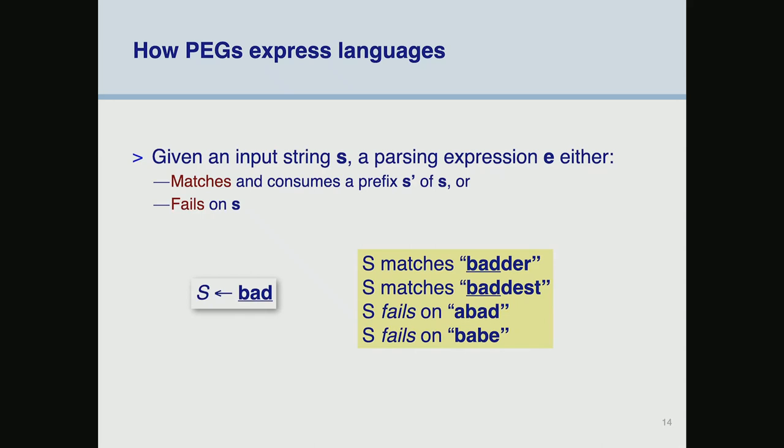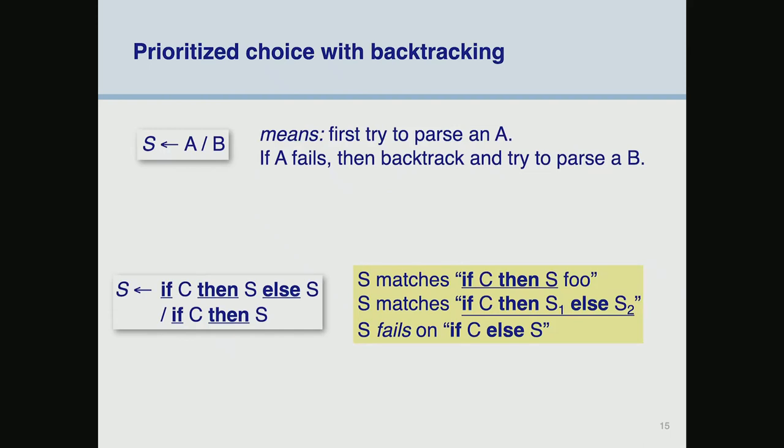Here, if a rule wants to match 'bad', it'll match 'bad' and 'baddest' but not 'abad' or 'babe'. With prioritized choice A or B, we first try to parse A — if we succeed, great; if we fail, we backtrack everything that A consumed back into the input stream and try B. For an if-then-else example, the first rule matches easily; the second fails on the first choice, backtracks, then matches with the second choice; the third doesn't match at all.